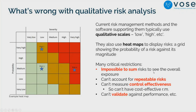What's wrong with qualitative risk analysis? A lot of software out there uses qualitative systems, which have the advantage of being very simple. They typically use two scales — one for the chances of something happening and one for the magnitude of impact — and from that you often see heat maps. Heat maps describe in red something with high probability and high impact, green for less worrying risks, and those in the middle where we're not sure.